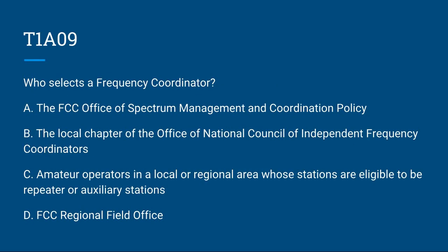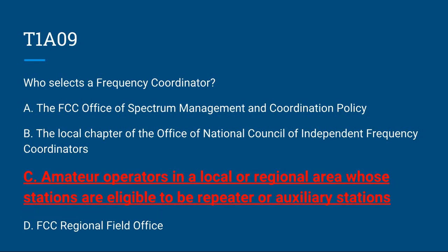T1A09: Who selects a frequency coordinator? A, the FCC Office of Spectrum Management and Coordination Policy; B, the local chapter of the Office of National Council of Independent Frequency Coordinators; C, amateur operators in a local or regional area whose stations are eligible to be repeater or auxiliary stations; or D, FCC regional field office. The correct answer is C, amateur operators in a local or regional area whose stations are eligible to be repeater or auxiliary stations.